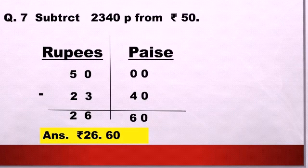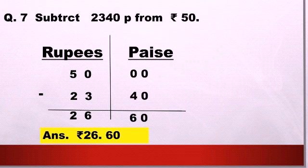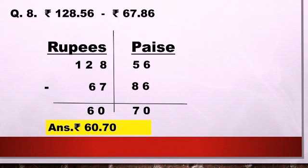Question number seven: subtract 2340 paise from 50 rupees. First, convert 2340 paise into rupees and paise: 2340 paise equals 23 rupees 40 paise. Since 50 rupees is more than 23 rupees 40 paise, place 50 rupees as the minuend on top. Make two columns, arrange the numbers, and subtract. After subtraction, the answer is 26 rupees 60 paise.